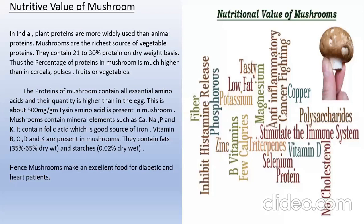Now, nutritive value of mushrooms. In India, plant proteins are more widely used than animal proteins. Mushrooms are the richest source of vegetable proteins. They contain 21 to 30 percent protein on a dry weight basis. The percentage of protein in mushroom is much higher than in cereal pulses, fruits, or vegetables. The proteins of mushroom contain all essential amino acids, and their quantity is higher than in eggs — there is about 500 mg per gram of lysine amino acid present in mushroom. Mushrooms contain mineral elements such as calcium, sodium, potassium, and phosphorus. They contain folic acid, which is a good source of iron. Vitamins B, C, D, and K are present in mushrooms. They contain low fat; hence mushrooms make an excellent food for diabetic and heart patients.